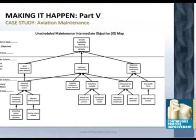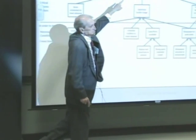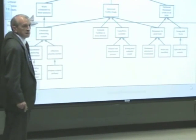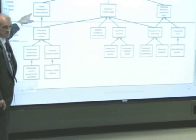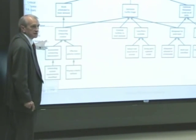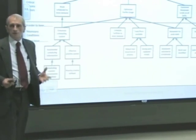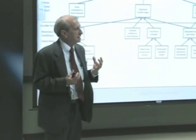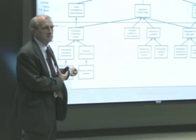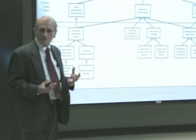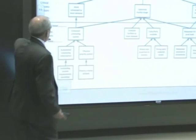Here is an Intermediate Objectives Map — this is a logic map. It has the goal on top, the second layer is the critical success factors, and the third layer is necessary conditions. It works like this: in order to have the goal I must have these; in order to have the critical success factors I must have these necessary conditions. I cannot tell you how the leadership team embraced this simple, logic-based method.